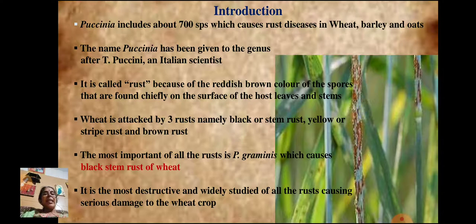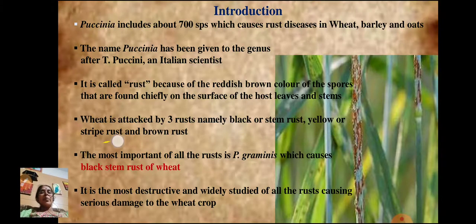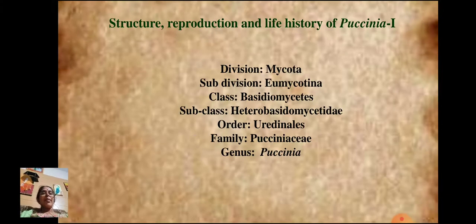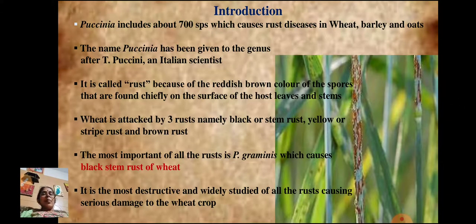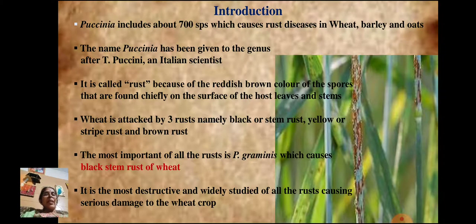Wheat is attacked by three rusts: black or stem rust, yellow or stripe rust, and brown rust. The most important of all is the black stem rust of wheat, caused by Puccinia graminis.